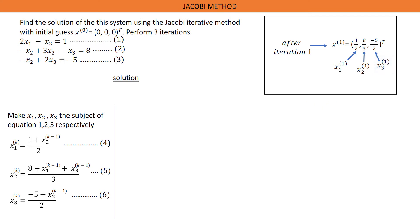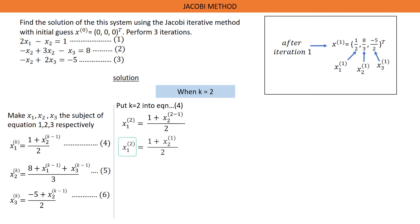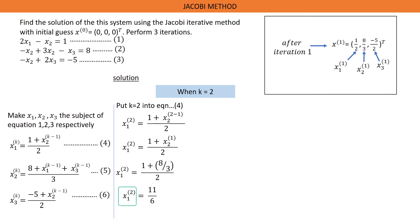Let's look at iteration 2. When K equals 2, put K equals 2 into equation 4. Solving this gives us S1^(2) equals 1 plus S2^(1) all over 2. S2^(1) is 8/3, so we replace it with 8/3. Solving this gives us S1^(2) equals 11/6.